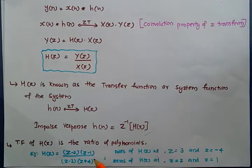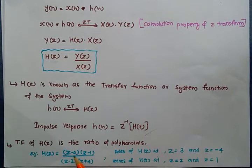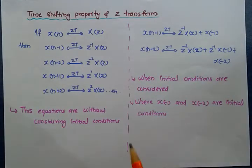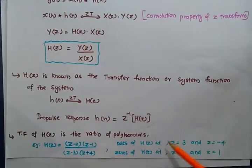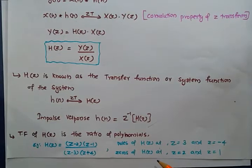From this equation, we can find out the poles and zeros. The poles of H(z) are at z equal to 3 and z equal to minus 4. The zeros of H(z) are at z equal to 2 and z equal to 1. The location of the poles and zeros is very important, because by using these poles we can analyze the stability and causality of the system.